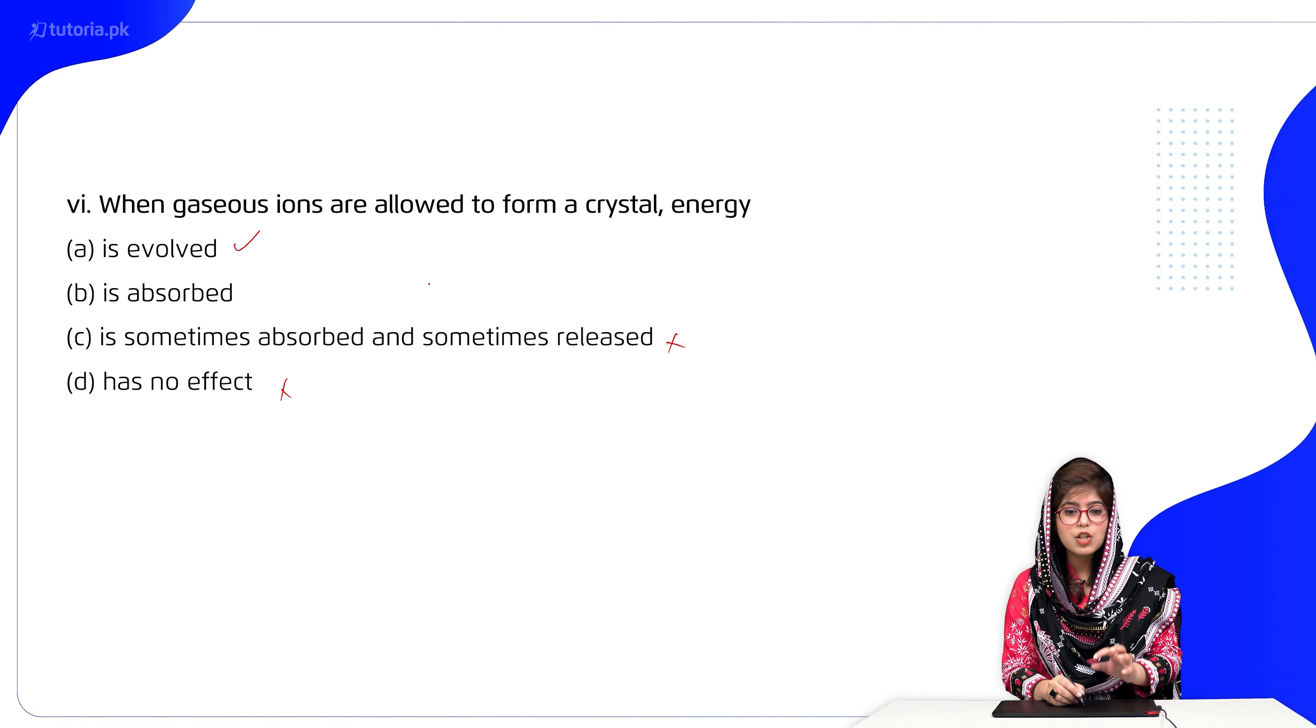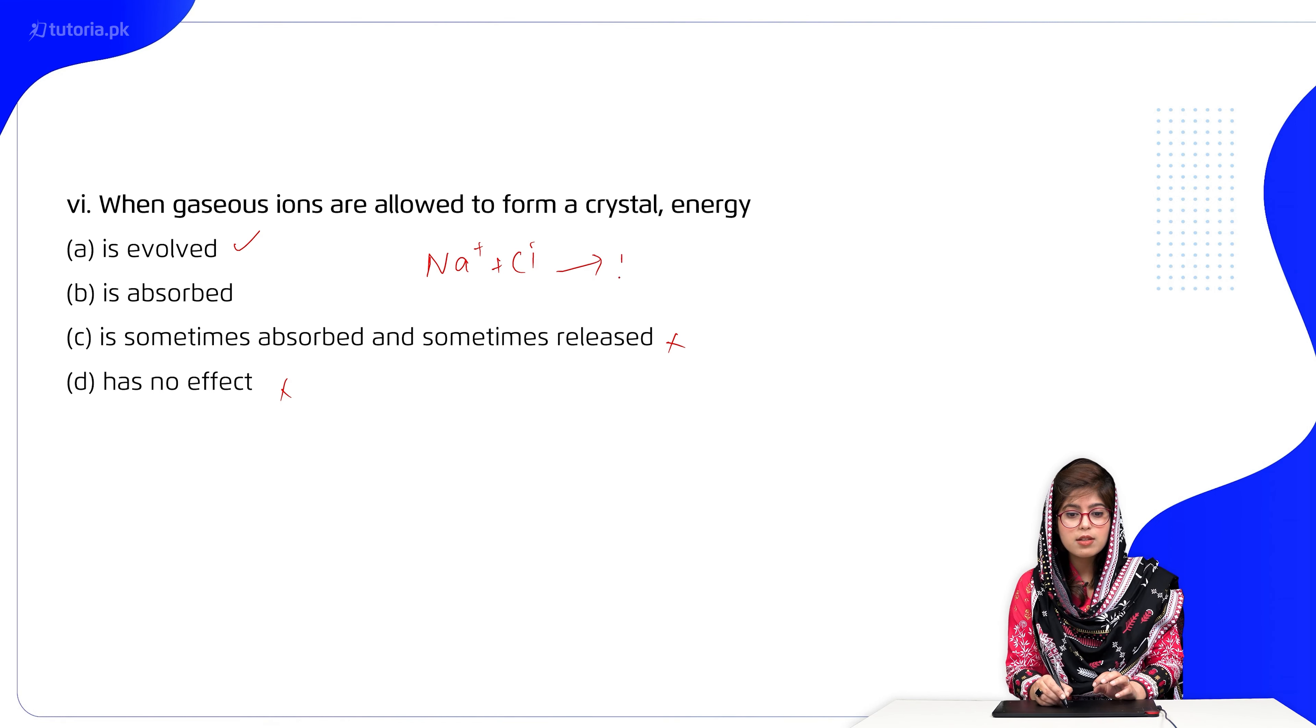We discussed that gaseous ions were made from sodium chloride. So it was NaCl, and we said that the energy released is exothermic, 786 kilojoules per mole.